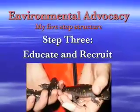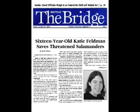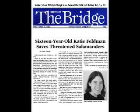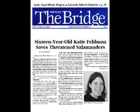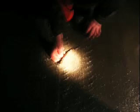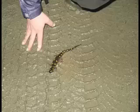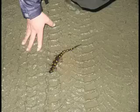Step 3. Educate and Recruit. Get your issue into the public eye. Tell people about what you're doing. Try to get press coverage and spread it by word of mouth. Get people invested in helping you. You can recruit friends, family, anyone who seems interested. Tell them what's at stake and what they can do to help.